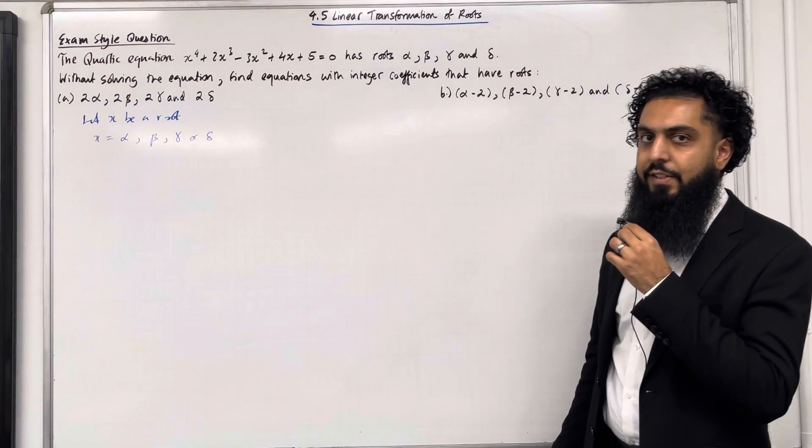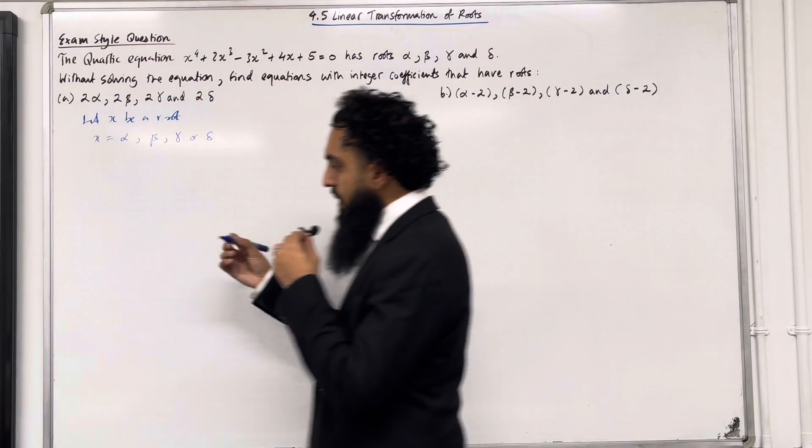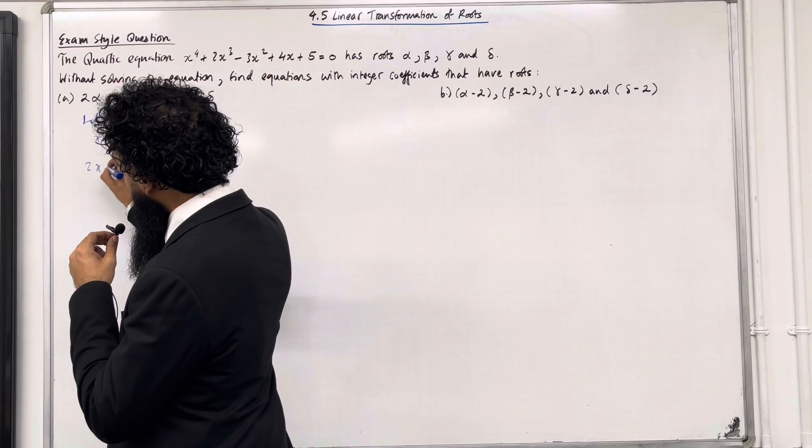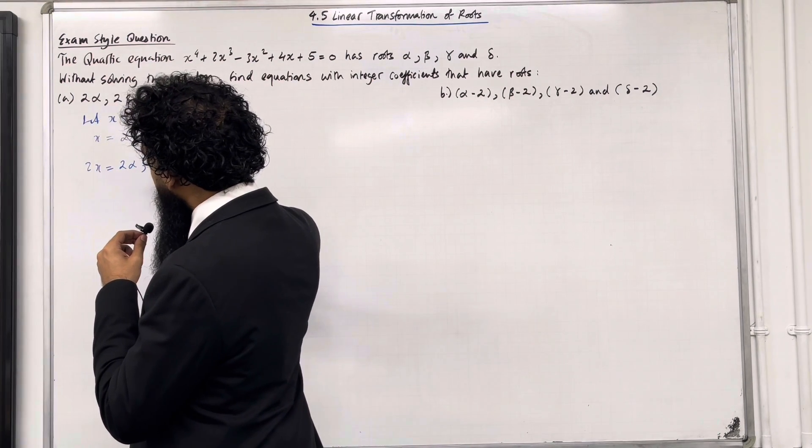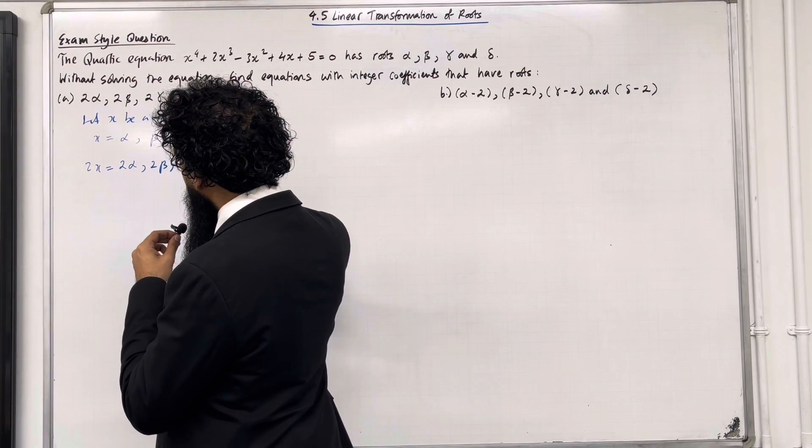I'm going to multiply x by 2. So I've got 2x can equal 2α, 2β, 2γ or 2δ.